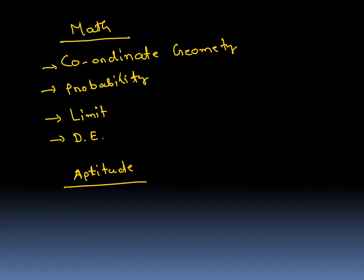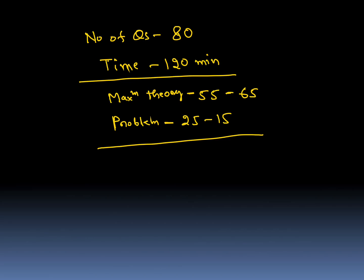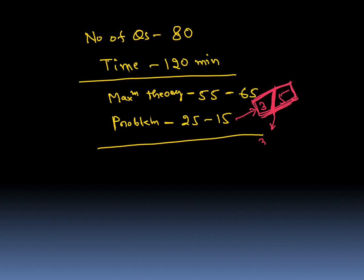So again, to summarize: 80 questions, 120 minutes. Maximum theory questions — around 55–65 questions — and problems around 15–25 questions. Some problems may take 3–5 minutes, so solve them last. If you are getting time then go for those types of questions. Around 3–4 problem questions will take 3–5 minutes; other simple questions you can solve within 1–3 minutes.